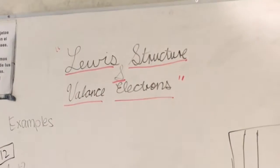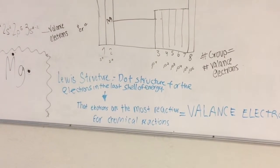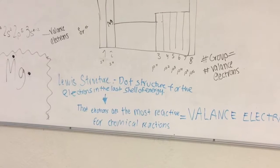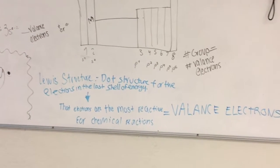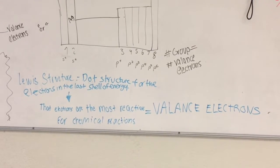Lewis Structure and balanced electrons. Lewis Structure is a dot structure for the electrons in the last shell of energy. These valence electrons are the most reactive for chemical reactions.